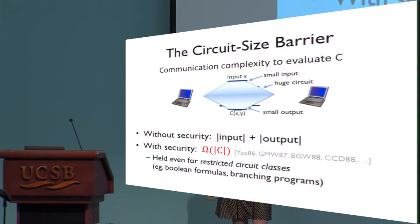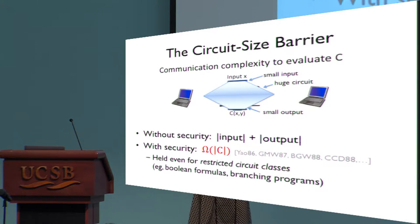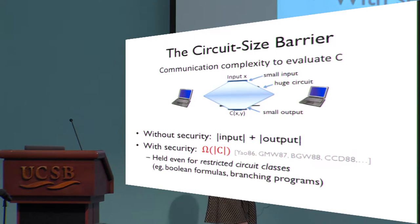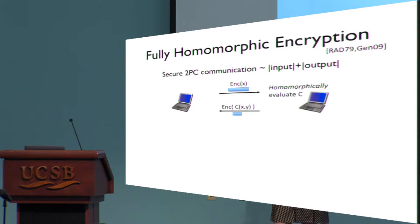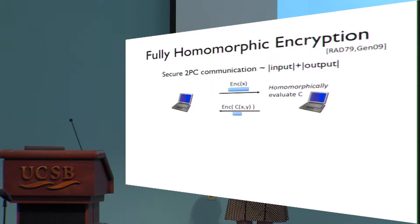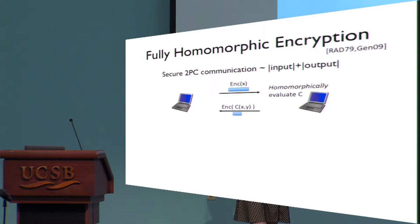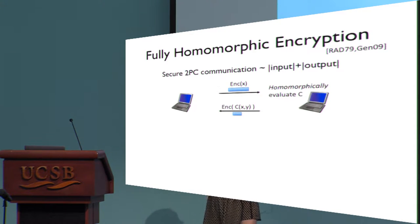Essentially all of the tools that we know how to use, even if you consider restricted classes of programs — things like branching programs, Boolean formulas — still require this entire circuit size amount of communication. The one exception is the recent breakthrough works in fully homomorphic encryption, which allows you to get security while mimicking the original procedure underneath the layer of encryption, breaking the circuit size barrier and giving something comparable to just inputs and outputs.